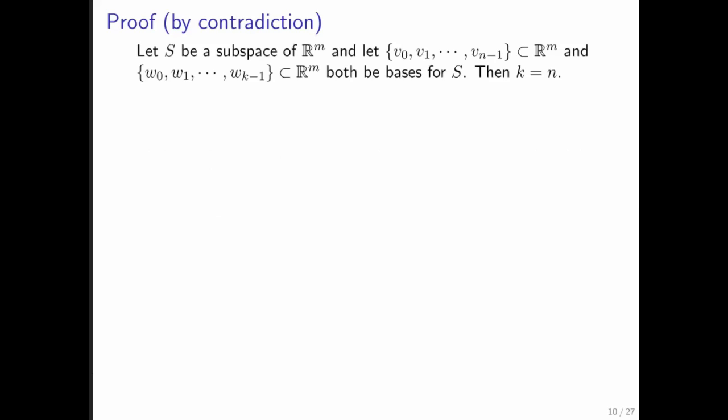Proof by contradiction. Let's assume that there are more vectors w than vectors v. We can create matrices that have those vectors as their columns.